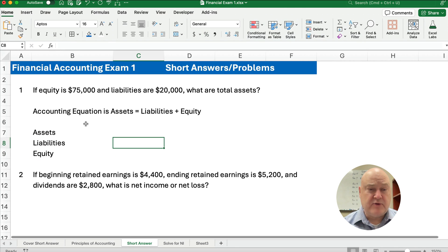Plug in what you know, solve for what you don't know. If equity is $75,000 and liabilities are $20,000, then this little format helps you see assets have to equal liabilities plus equity. So we're going to take the $20,000 plus the $75,000. And it looks like assets are $95,000. So our answer is assets are $95,000.